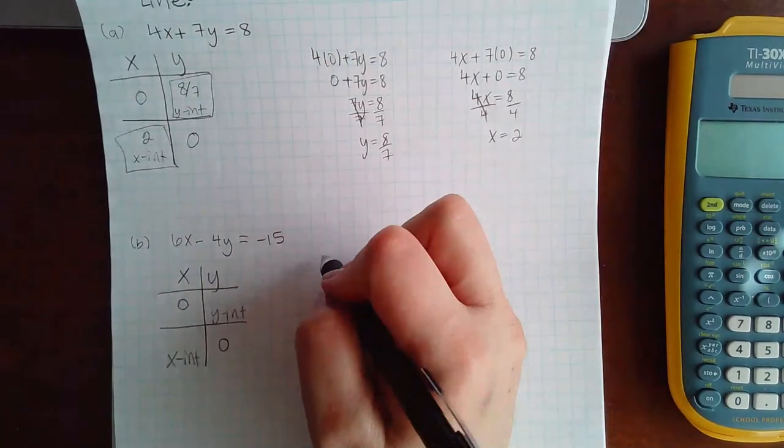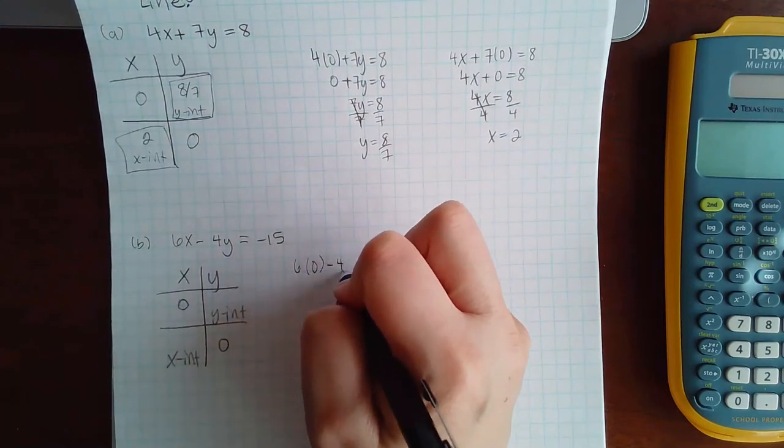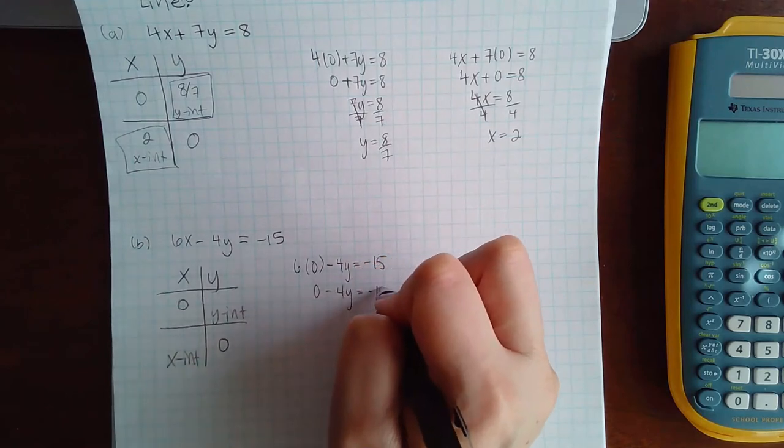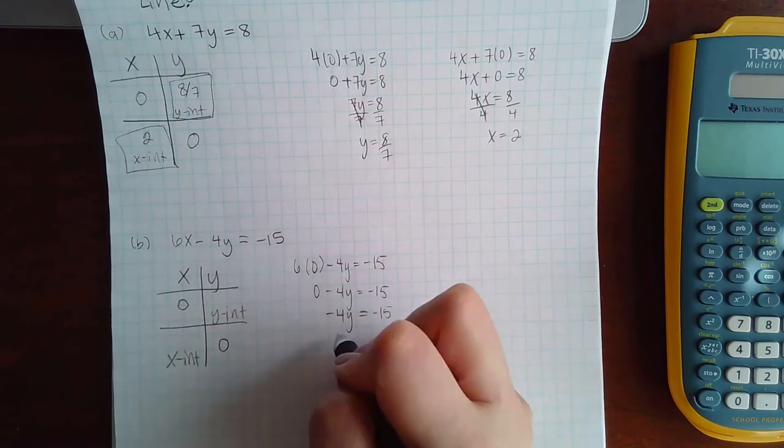So if I plug in zero for x, I get zero minus four y equals negative 15, which is negative four y equals negative 15.